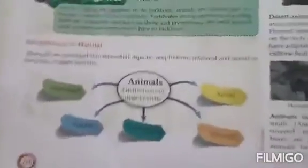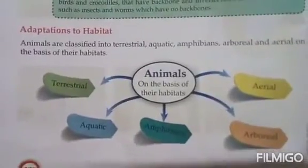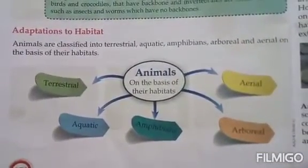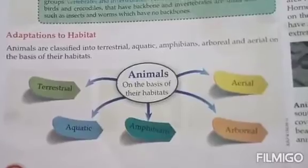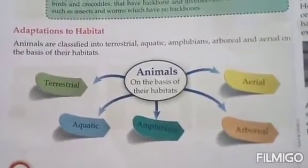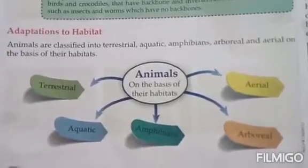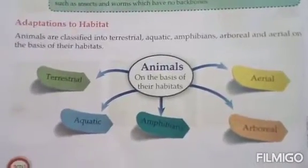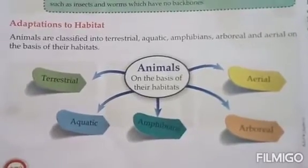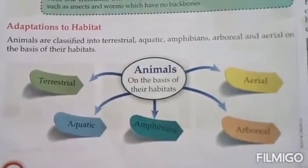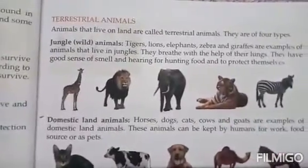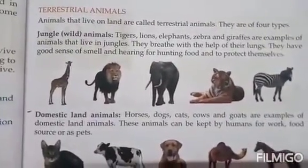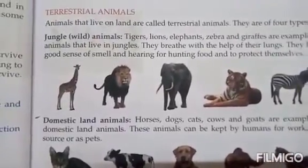Next, adaptation to habitat. Animals are classified into terrestrial, aquatic, amphibians, arboreal, and aerial, on the basis of their habitat. Animals that live on land are called terrestrial animals.